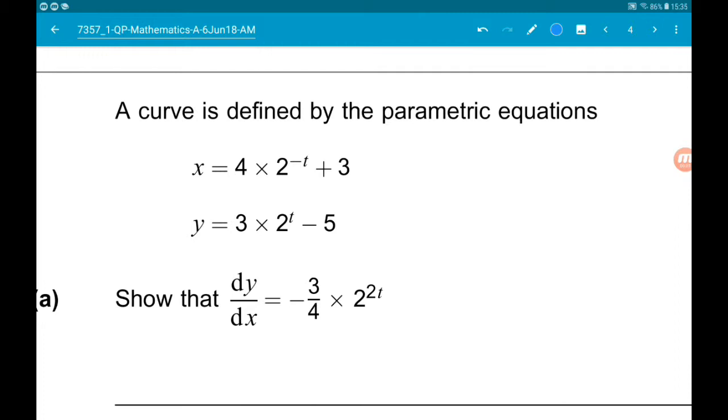We want to show that dy by dx is minus 3 quarters times 2 to the 2t. So what we need to do here is find dx by dt and dy by dt, and then do a little bit of magic. To be able to find those derivatives...